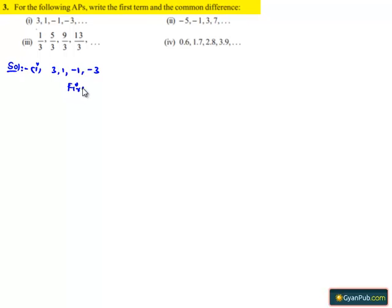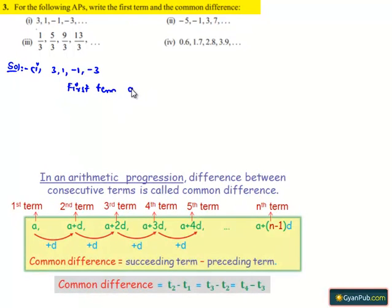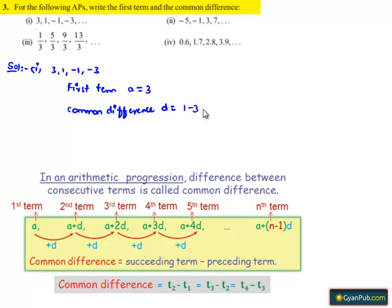Here, the first term A is given by the first term in the series, that is nothing but 3. And the common difference D is given by either second term minus first term or the third term minus second term, that is nothing but 1 minus 3, which is equal to minus 2.